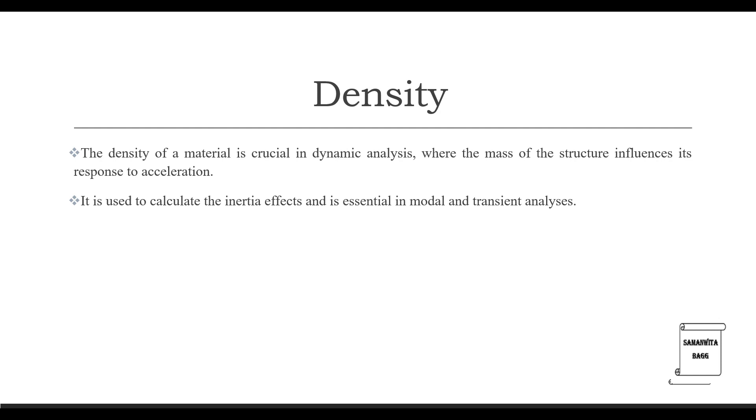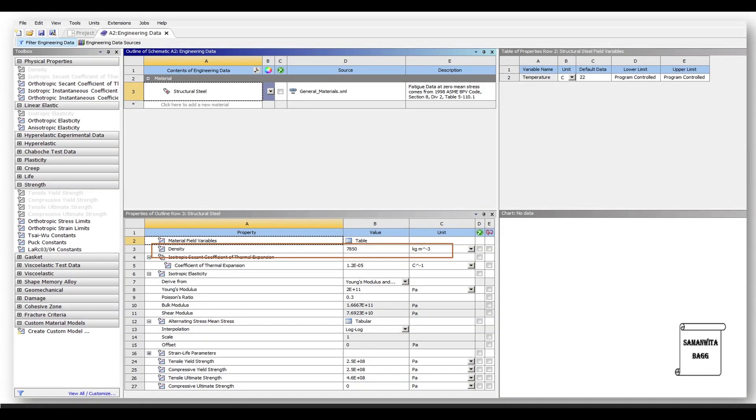The third property that we are going to discuss is density. The density of a material is crucial in dynamic analysis where the mass of the structure influences its response to acceleration. It is used to calculate the inertia effects and is essential in modal and transient analysis. Apart from that, in dynamic analysis or in static analysis as well, density is a property which is definitely required for a particular material. As you can see here, the density of structural steel is 7850 kg per meter cube.